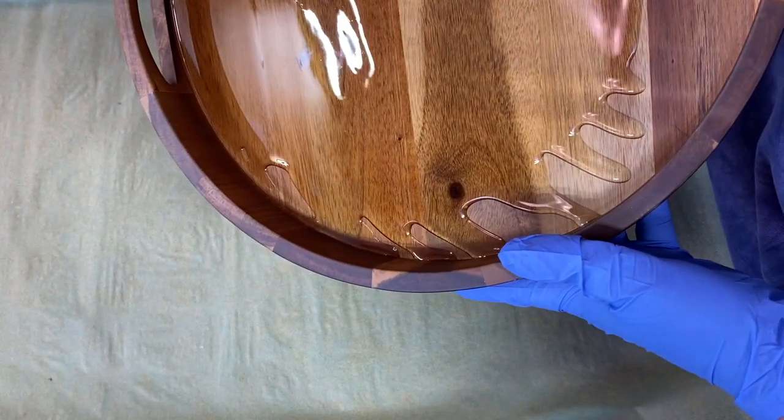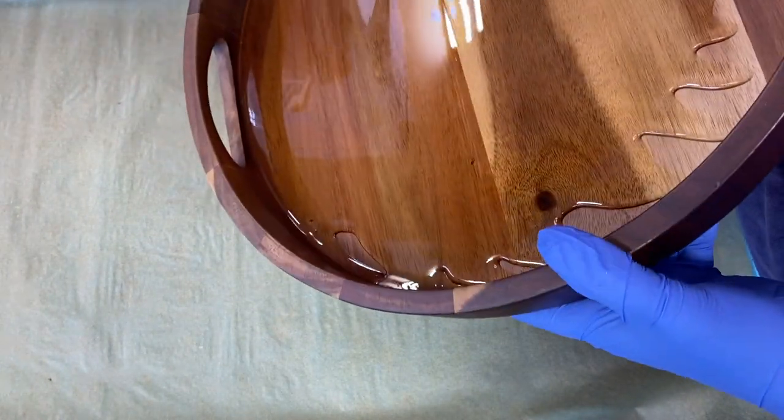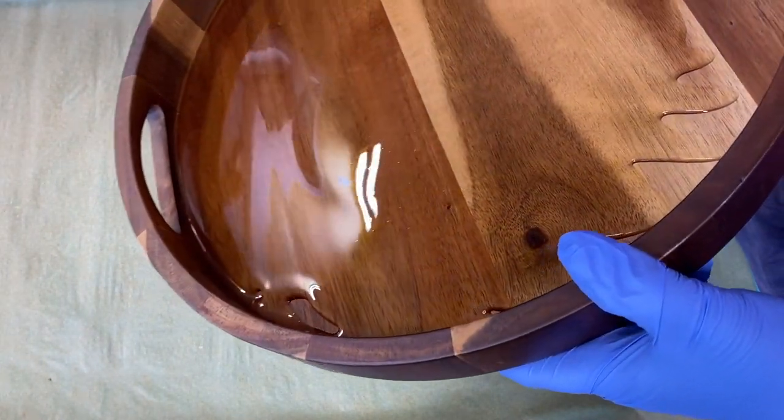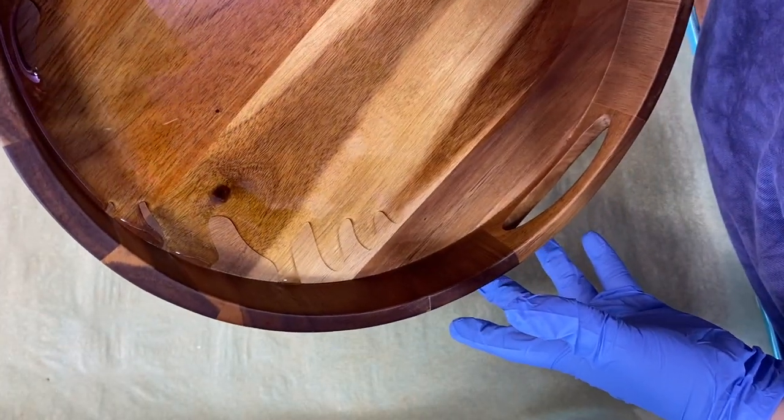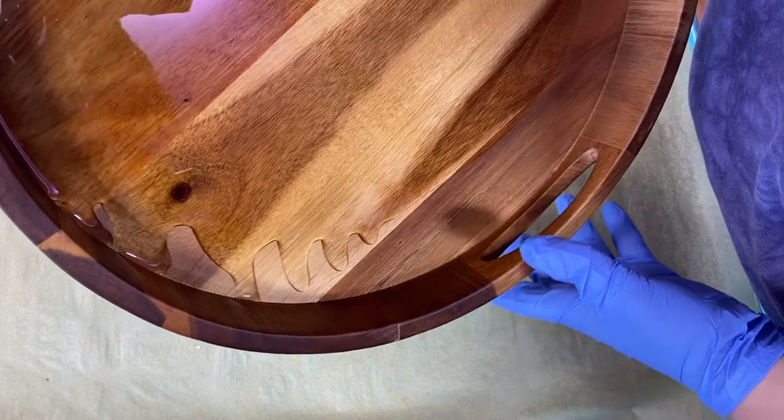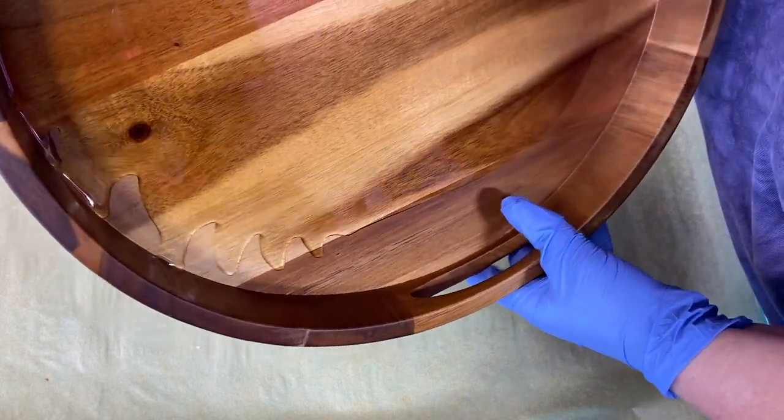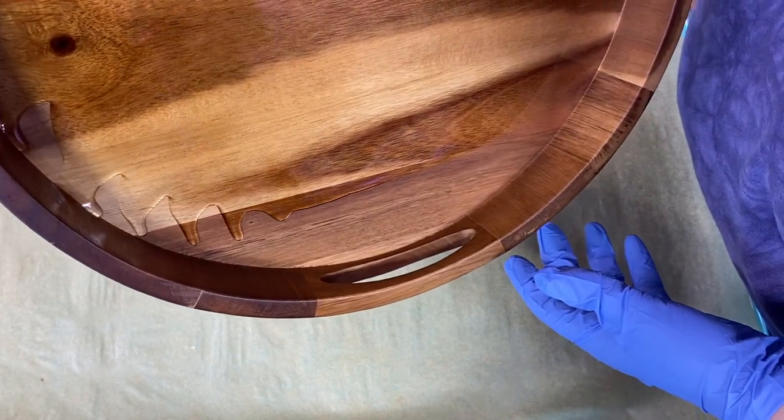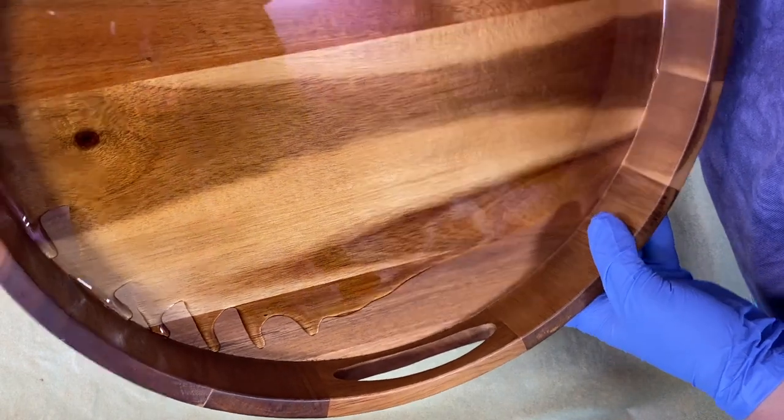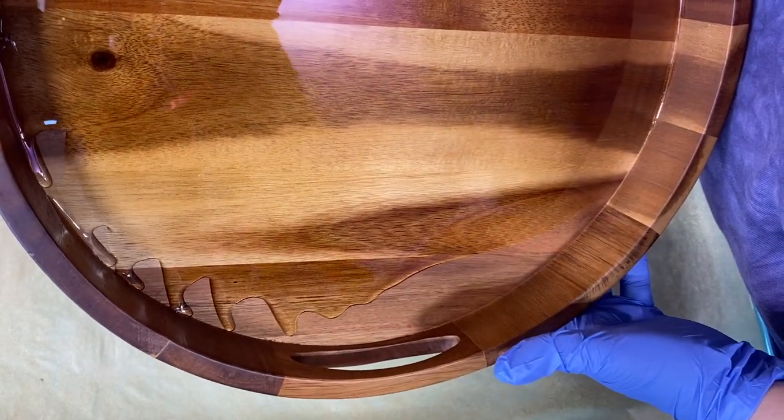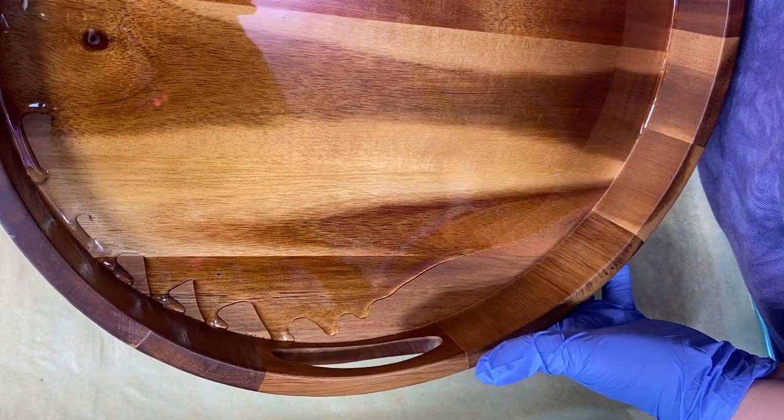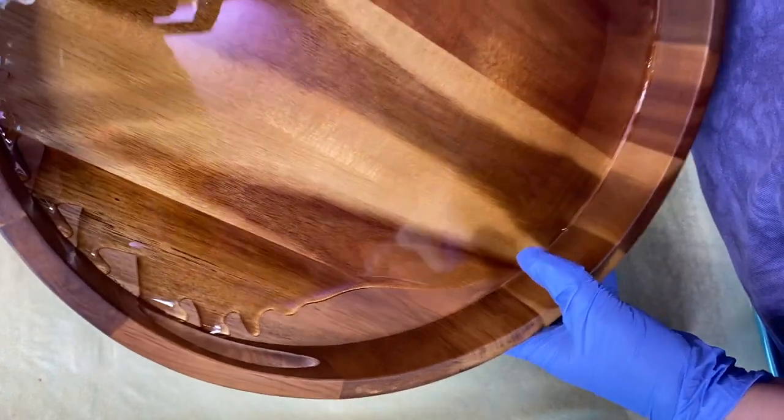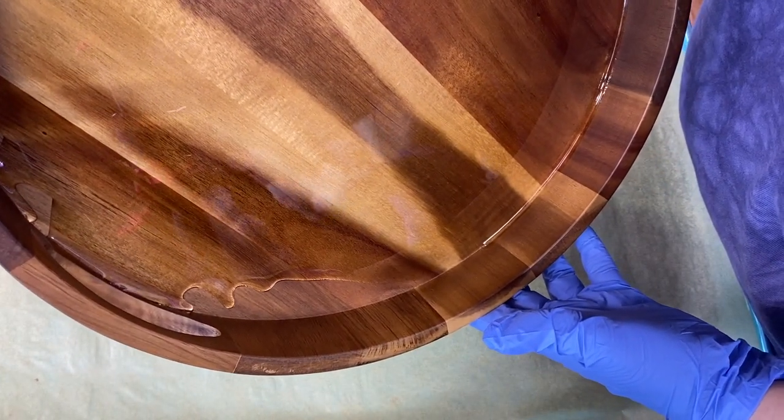Anyway, I was really, really happy with how that tray turned out with the chameleons on there. And especially when you got up close and it had kind of some brush stroke and some texture to it. That was cool. And I love wood grain showing through, too. So let's see if we can try and do this intentionally and make this happen.